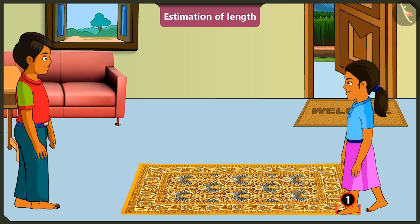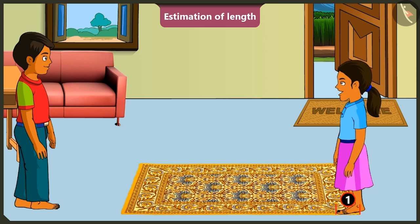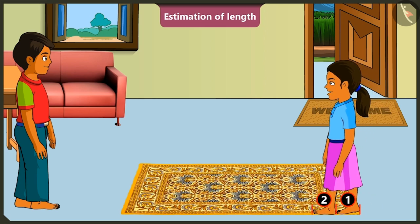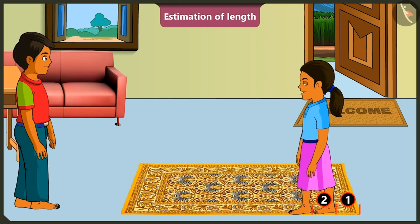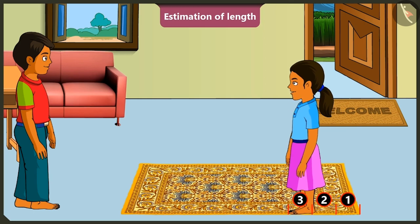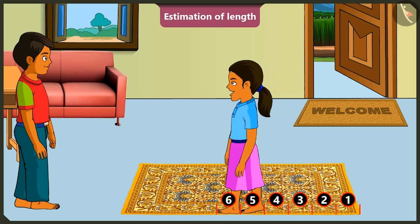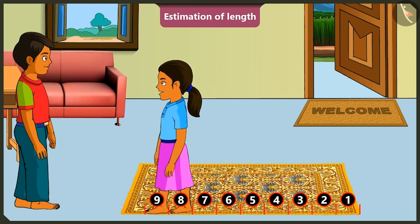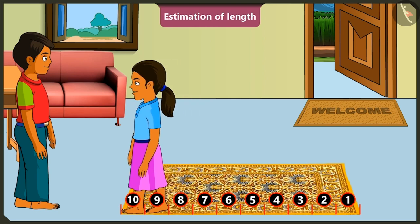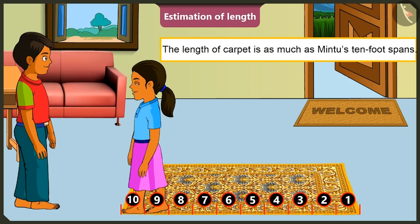Now I will place the left foot in front of the right foot, slightly touching the right foot in front like this. Then this would be the length of two foot spans. Now I will raise my right leg and place it in front of my left leg. There is a length of three foot spans. Now I walk through the length of the carpet: four, five, six, seven, eight, nine, and this is ten. The length of this carpet is as long as my ten feet.